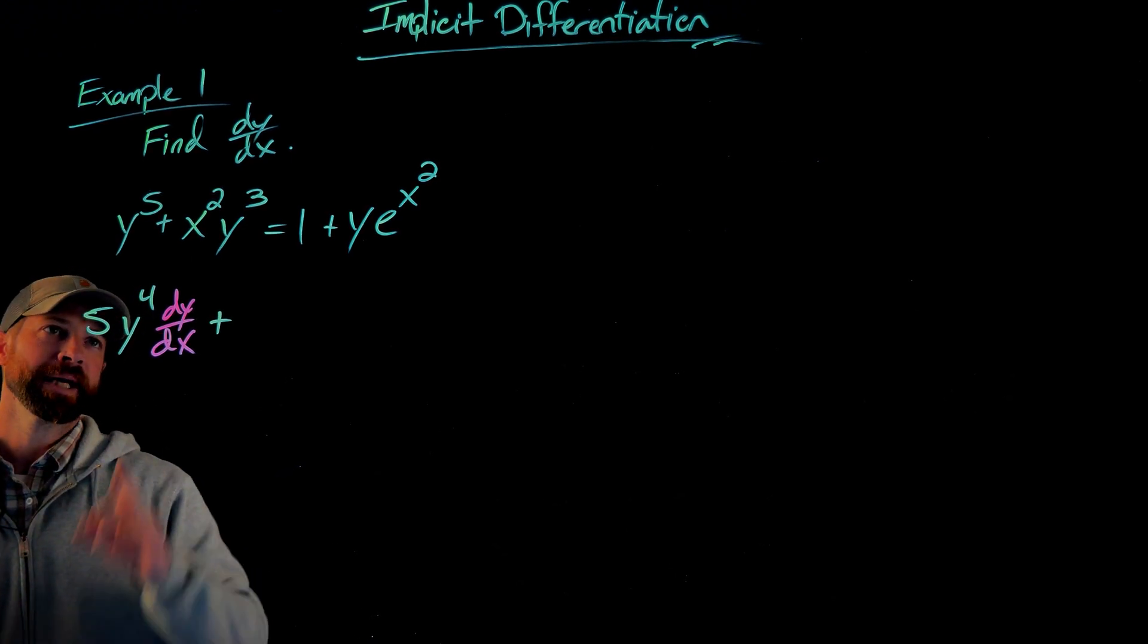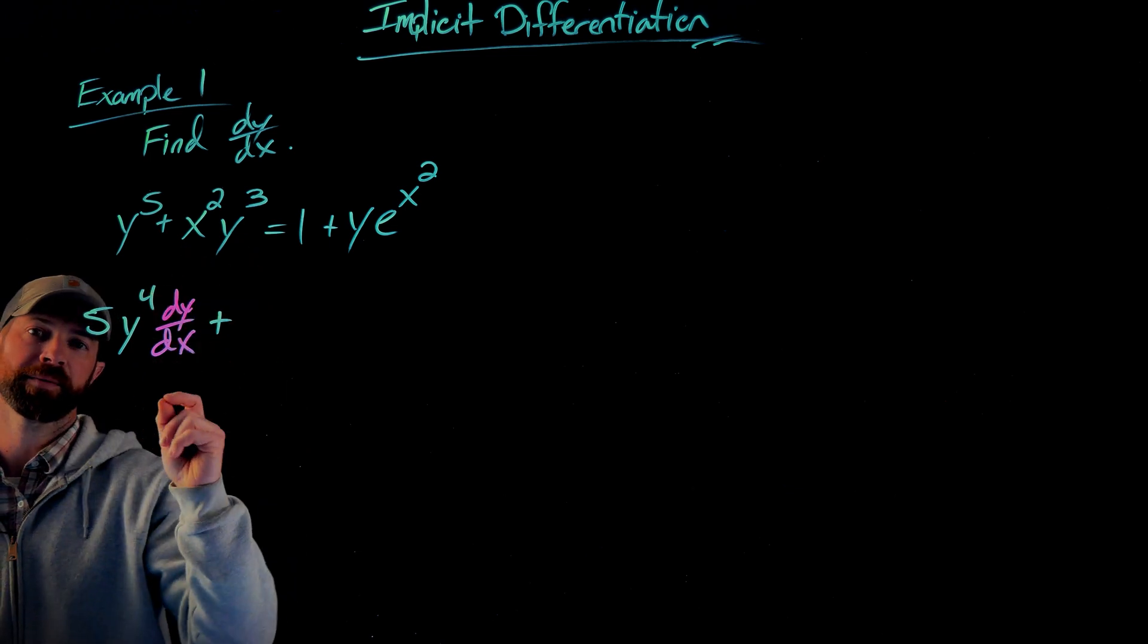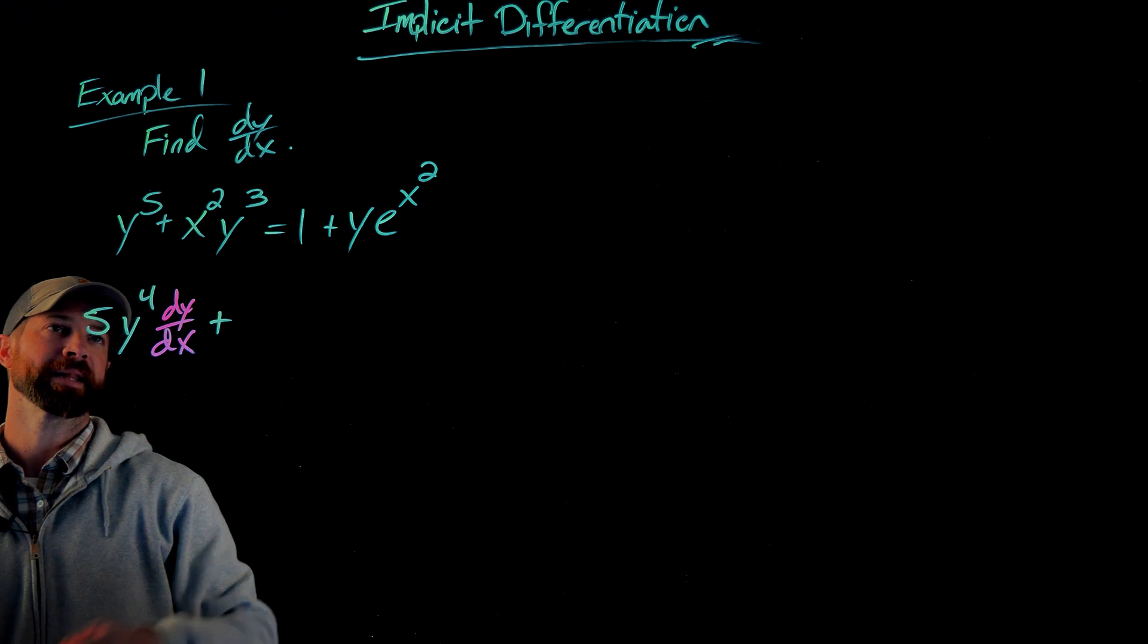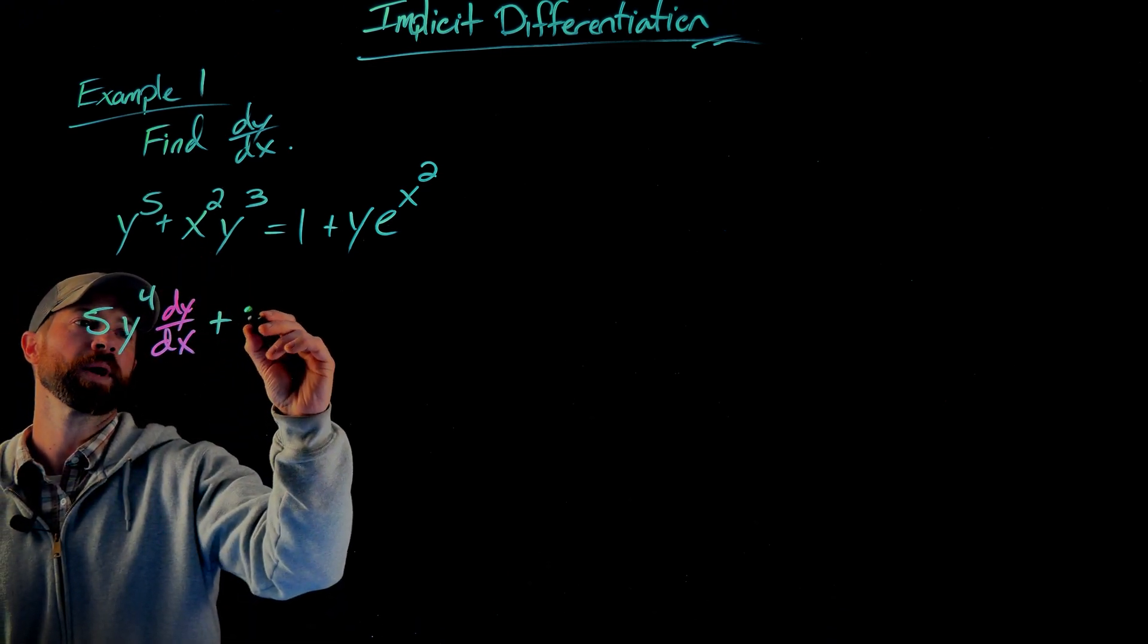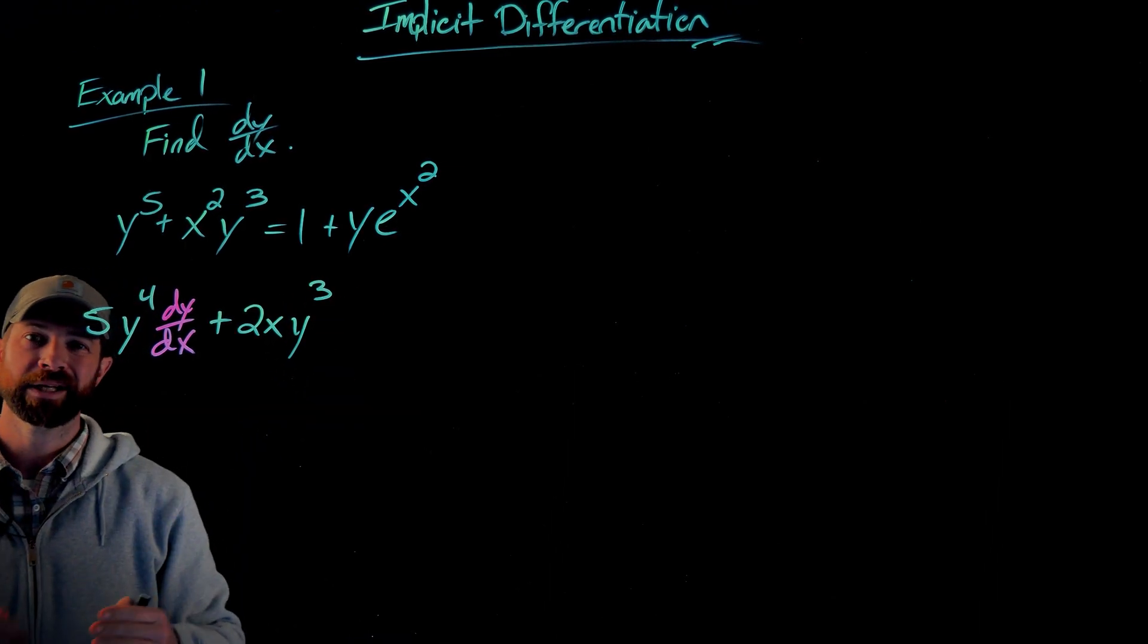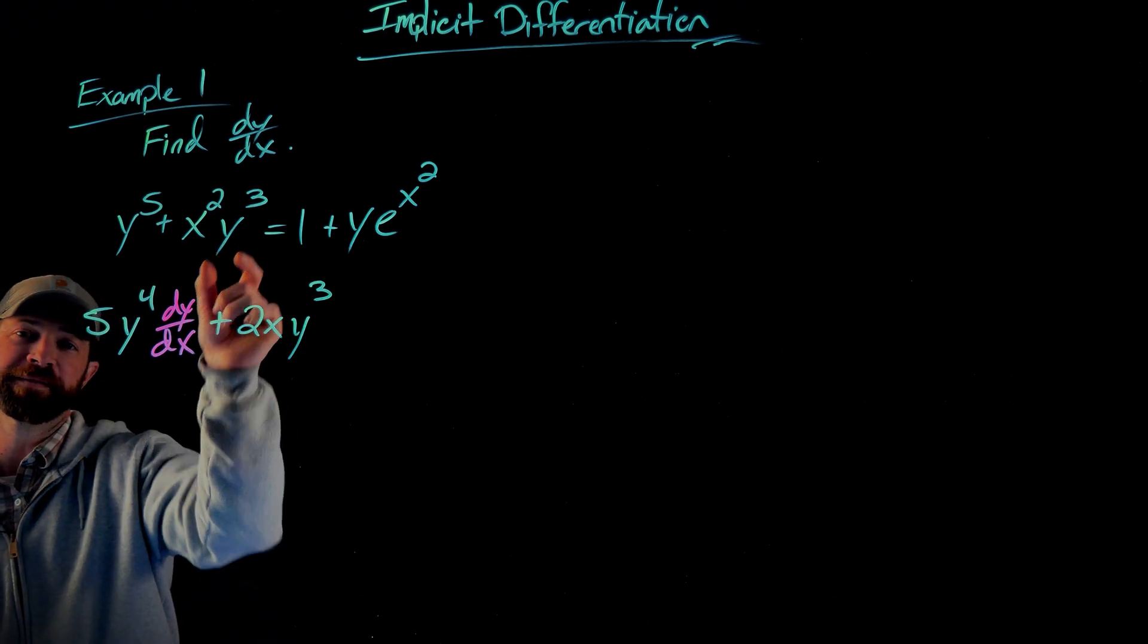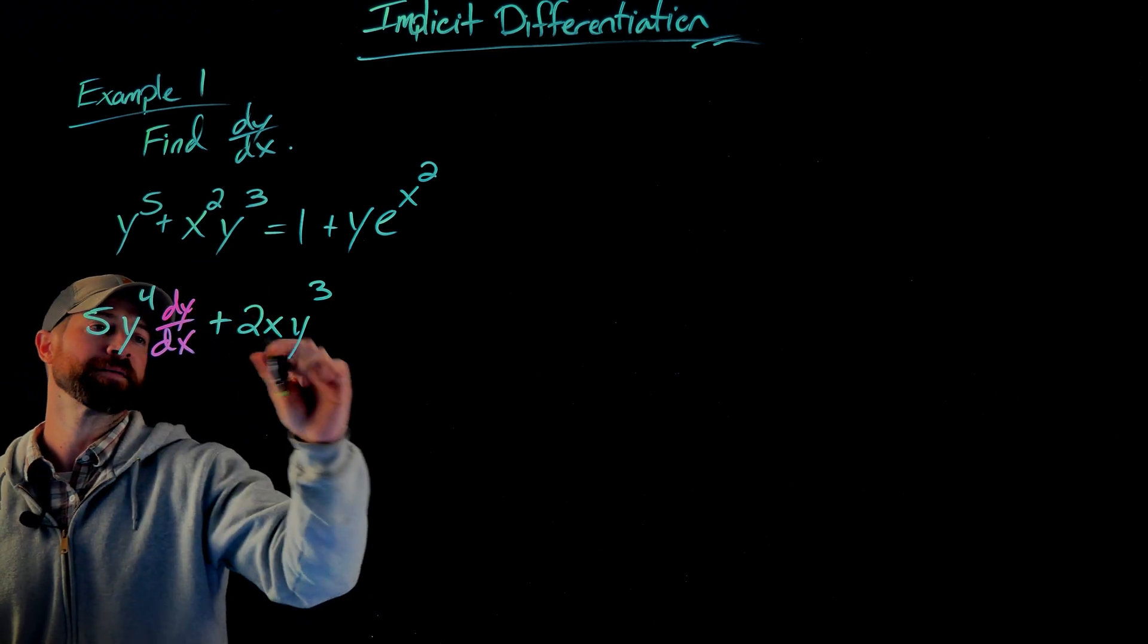Now to the second term, importantly here, this is the multiplication of two things that vary with respect to x. So we're going to have to use a product rule and it will look like this. So we differentiate the first factor first. So x squared becomes 2x to the 1 power times y to the third. We don't get any dy/dx from that move because we didn't differentiate this factor, but here we go with the next step.